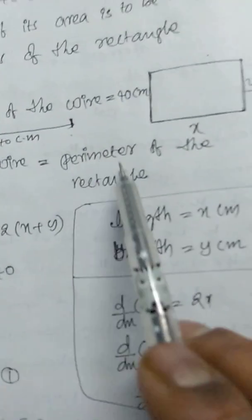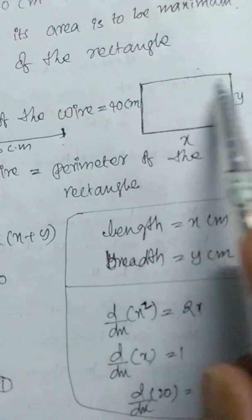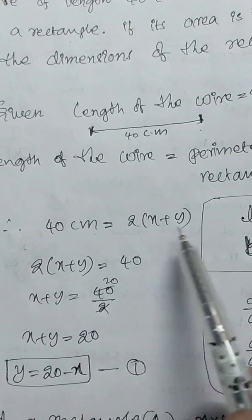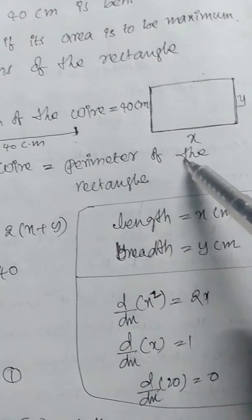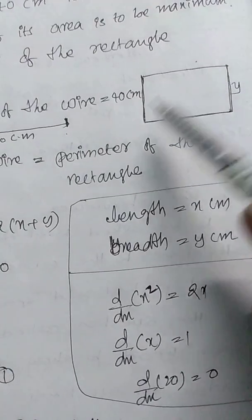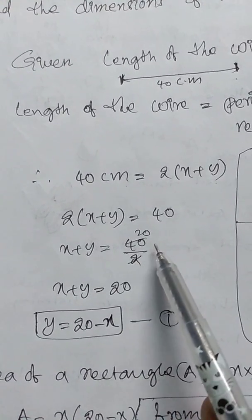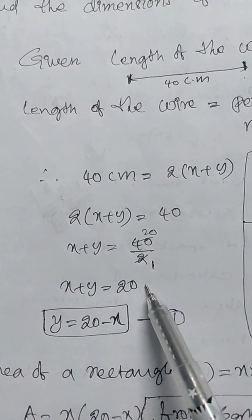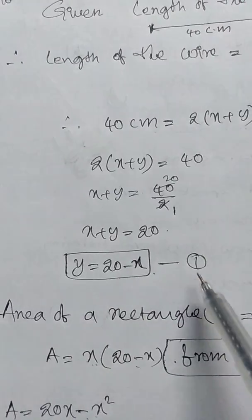Length of the wire is equal to perimeter of the rectangle. That is, 40 cm = 2(x + y), since perimeter of the rectangle = 2(length + breadth) = 2(x + y). So x + y = 40/2 = 20, therefore y = 20 - x. Assume this as equation 1.